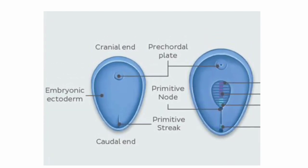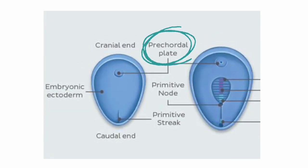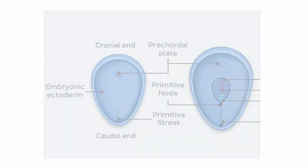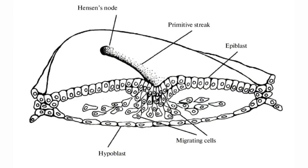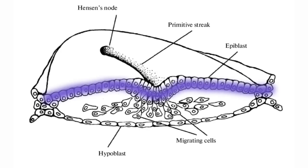Soon after the formation of the prochordal plate, the craniocaudal axis of the embryonic disc is determined — the prochordal plate is toward the head end. After its formation, the cells at the opposite tail end of the embryonic disc — that is, the epiblast cells — proliferate.